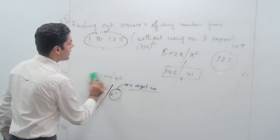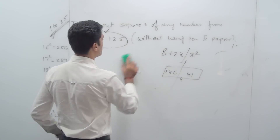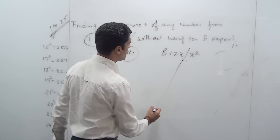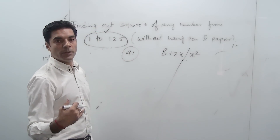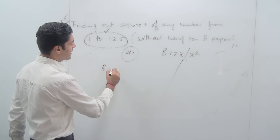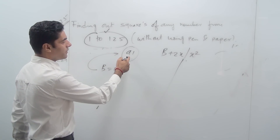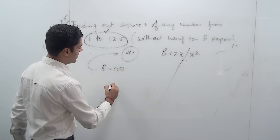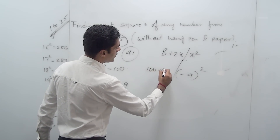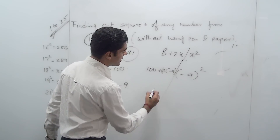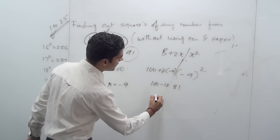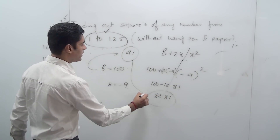Now let's say I want to find the square of 91. I compare with base 100, and I get a deficit of 9. So x is minus 9. Right-hand side: (−9)² = 81. Left-hand side: 100 + 2×(−9) = 100 − 18 = 82. So the answer is 8281, which is the square of 91.